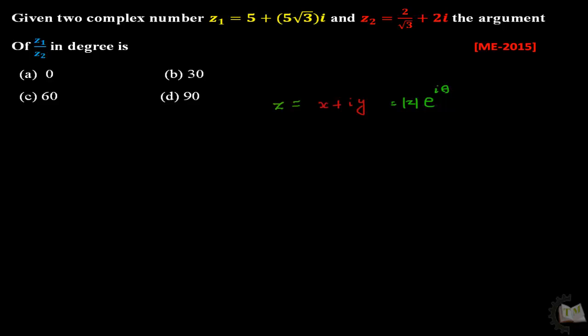Here theta is called the argument. Sometimes it is also called phase, and the value of theta is always a real number. So how to represent theta, the argument? You can write it as argument of Z which equals tan inverse, or inverse tan of y divided by x.